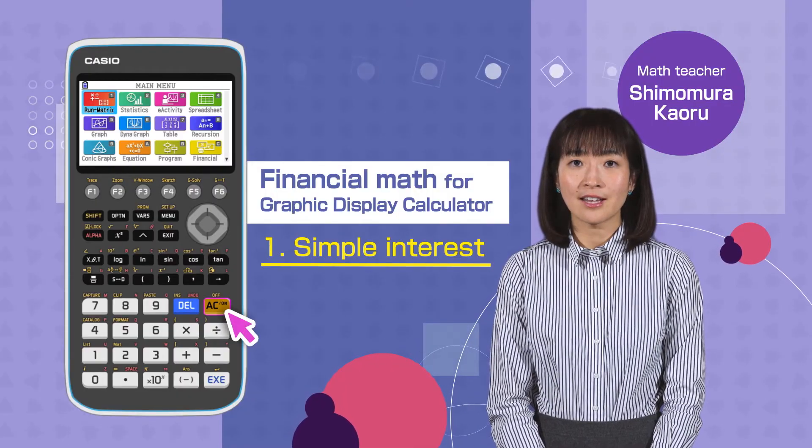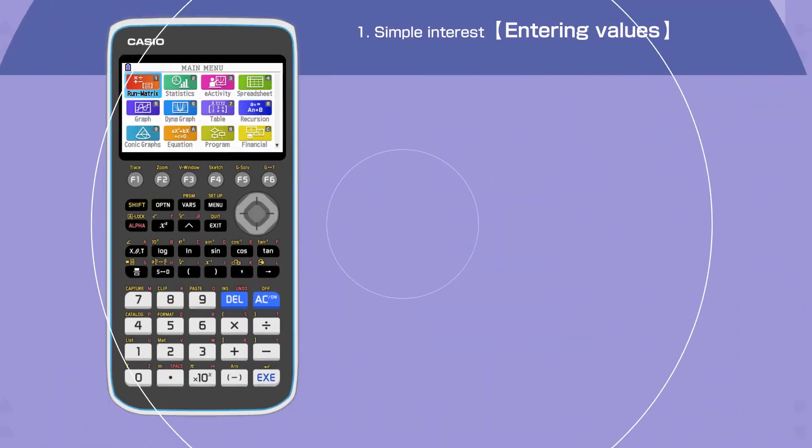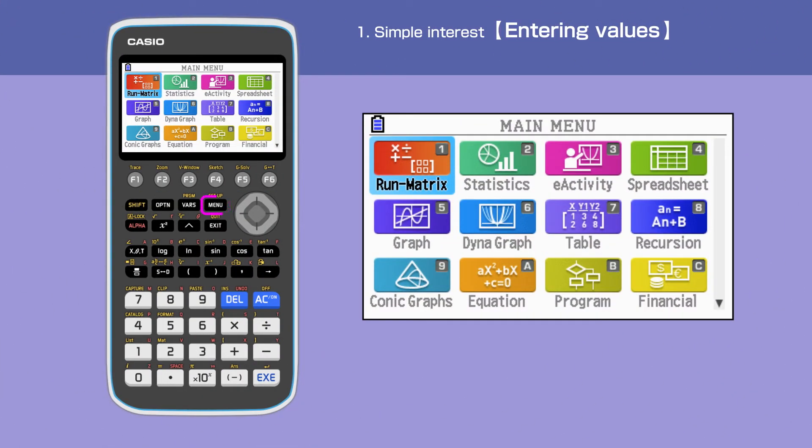Switch on your calculator, pressing AC button. Press the menu button to open the main menu, then move the cursor or press C to select financial.